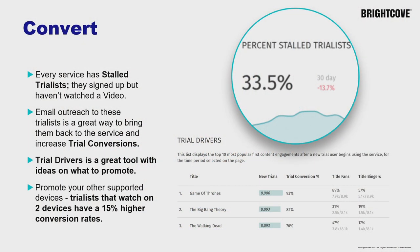When it comes to conversion, you can look at all trialists currently running a trial and understand the patterns they're showing. There can be a stalled trialist, and it's very important to act quickly — run campaigns based on the information you have about them and engage them with relevant content. It's also important to see which content is working. You might decide not to give them Game of Thrones because it's your pearl, but instead suggest a similar genre to whet their appetite so they subscribe and then watch it.